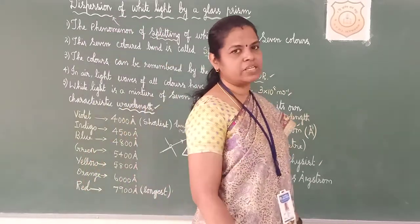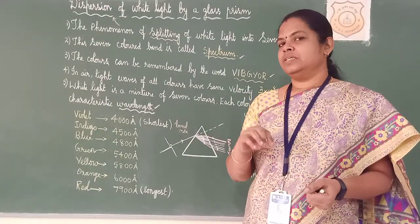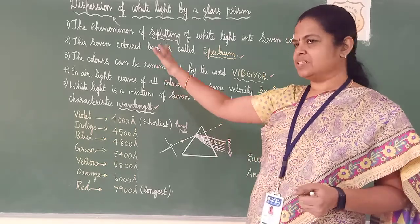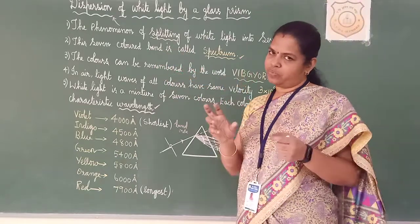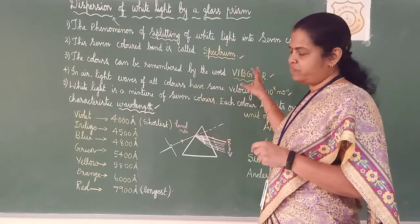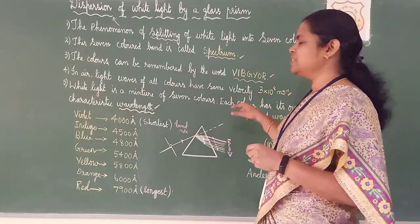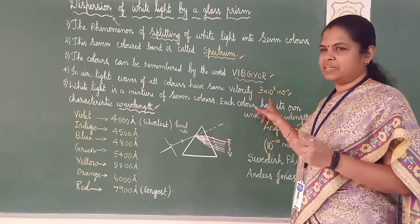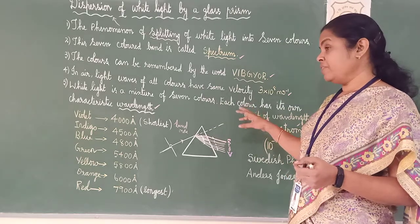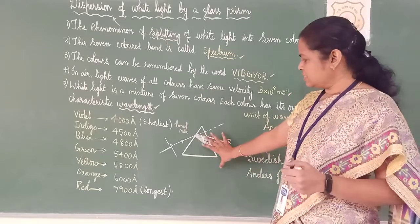Five points if they ask you to write about dispersion or your knowledge about dispersion. What will you tell? First definition: the phenomenon of splitting of violet into seven colours is called dispersion. That is the first thing. Second thing is that seven colours which we are forming now, the band, that is called the spectrum. Then the colours can be remembered by the word or acronym, that is VIBGYOR. Then in air, what is the velocity? 3 to the power 8 meter per second. In air as well as vacuum it is the same.